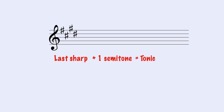For example, if we have four sharps, the last sharp is Re — D. A semitone up from Re sharp is Mi. So the major key would be E.